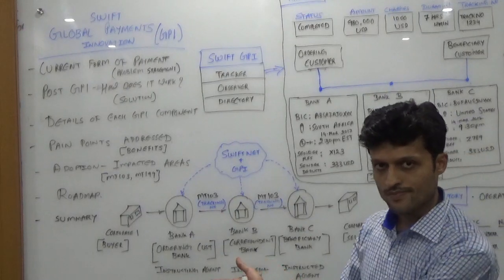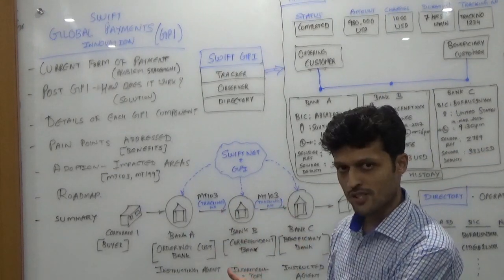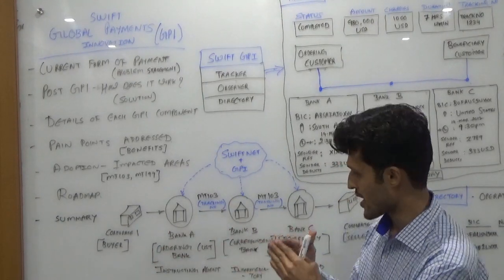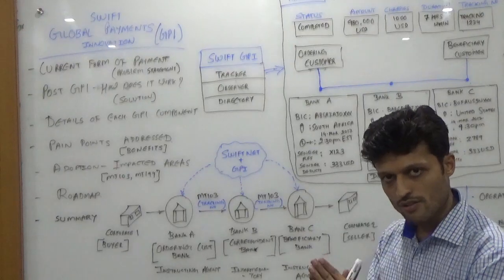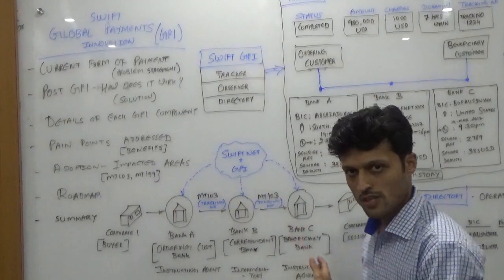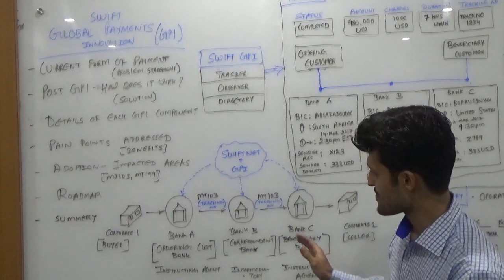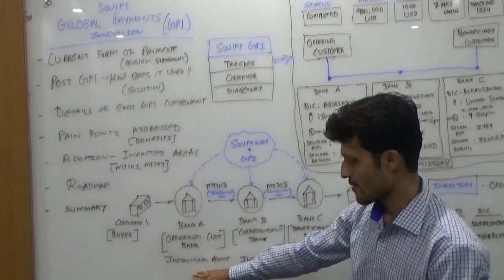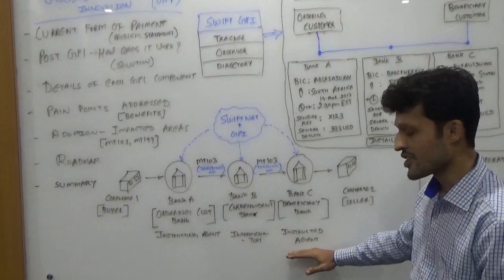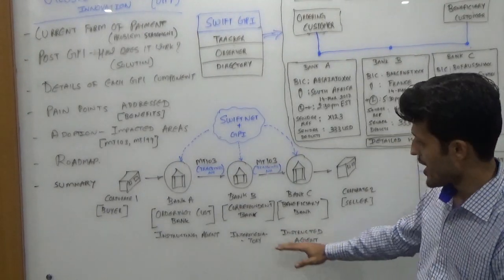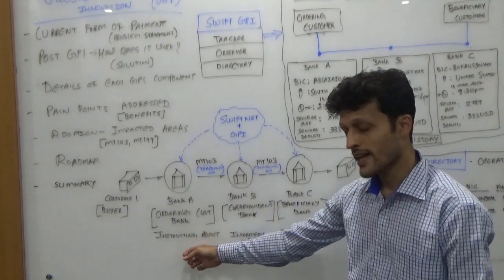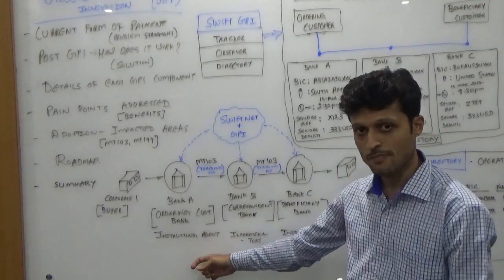The seller ships the goods along with the invoices. Once the buyer receives the goods, he matches and compares the invoice, and if everything is in line, the buyer tries to release the payment for those goods. In that case, there is a buyer bank — Bank A, the ordering customer bank — and a seller bank or beneficiary bank, which is Bank C. There is also an intermediary bank, which only comes in when there is no direct relationship between the buyer's and seller's bank. There can be more than one intermediary bank if there is no direct relationship between the correspondent bank and the beneficiary bank.